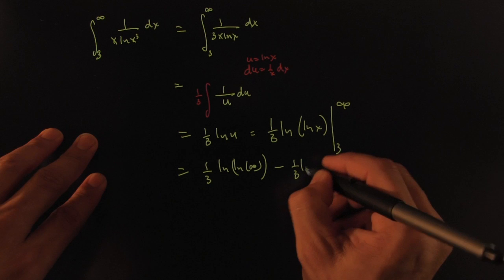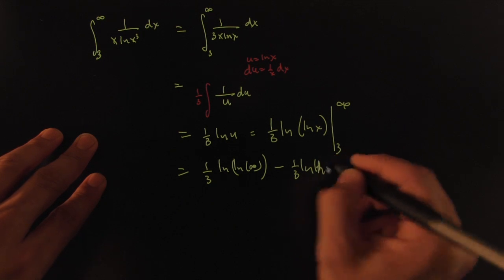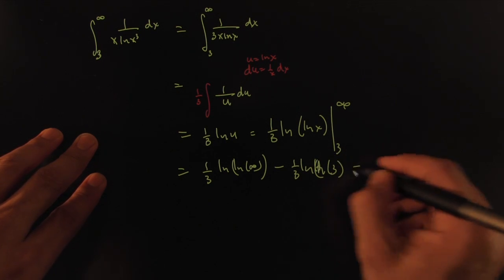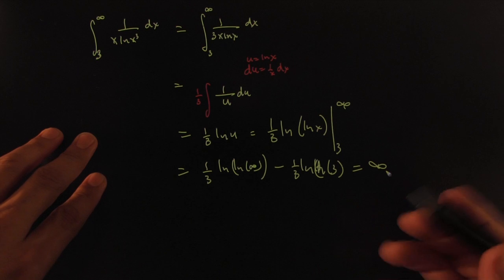So this would be equal to 1/3 ln(ln(infinity)) minus 1/3 ln(ln(3)), which of course is equal to infinity. That shows you that this is infinite.